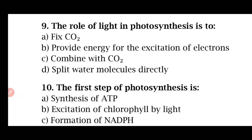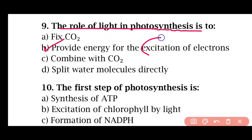Question 9: The role of light in photosynthesis is to — fix carbon dioxide, provide energy for excitation of electrons, combine with carbon dioxide, or supply water molecules directly. The correct answer is option B. Light provides energy for the excitation of electrons.